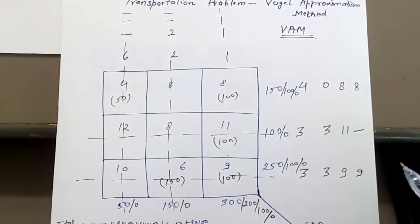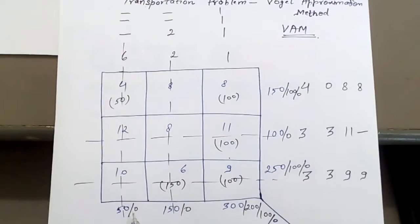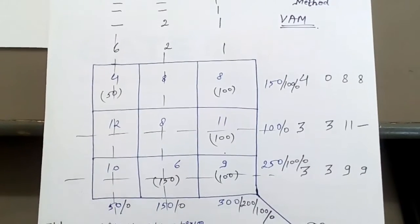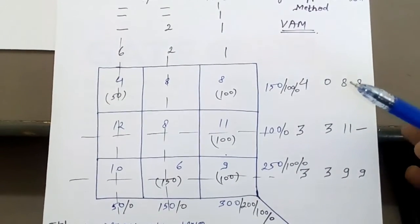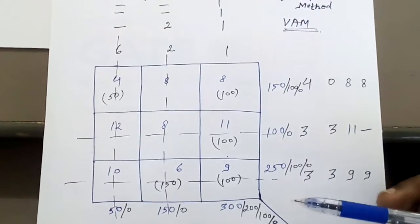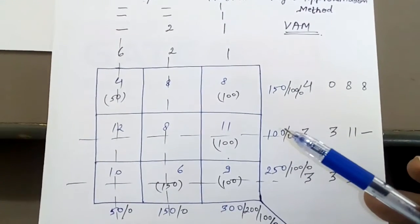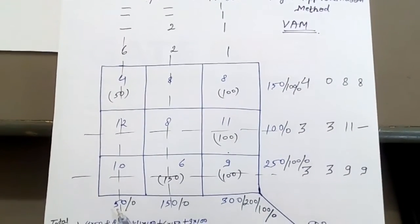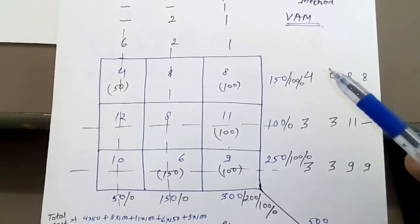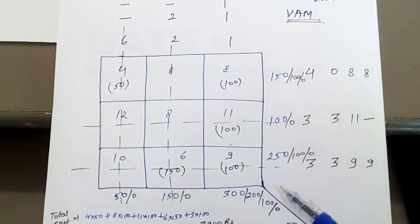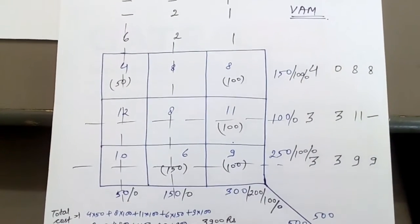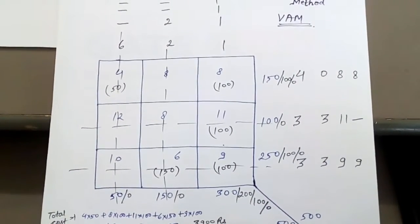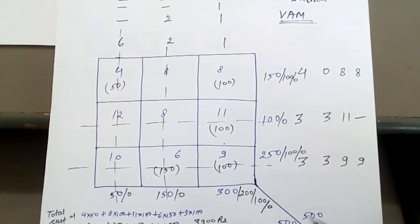The transportation matrix values are 4, 8, 8, 12, 8, 11, 10, 6, 9. To solve this by Vogel's approximation method, first check whether it is a balanced problem. The supply is 50, 150, 300 and the demand is 150, 150, 100, and 250. Total supply and total demand both come out to be 500, so it is a balanced problem. If it were not balanced, you would need to add a dummy row or column.